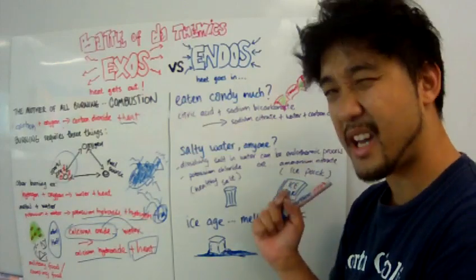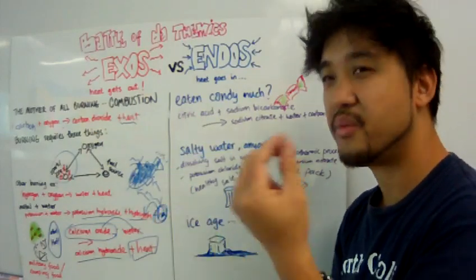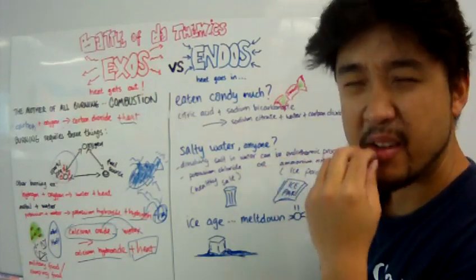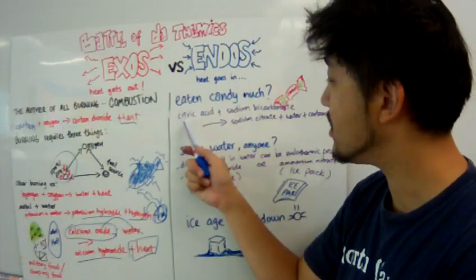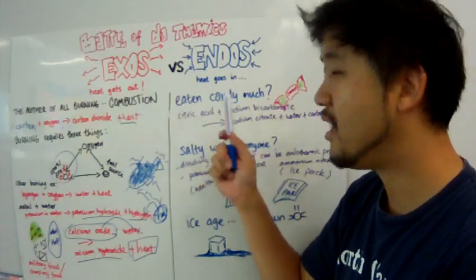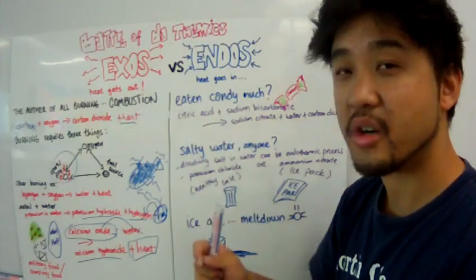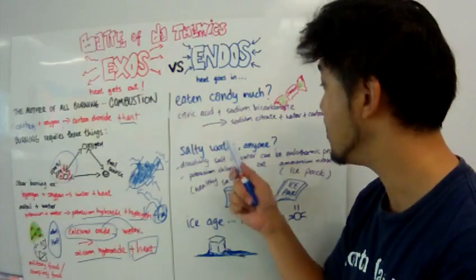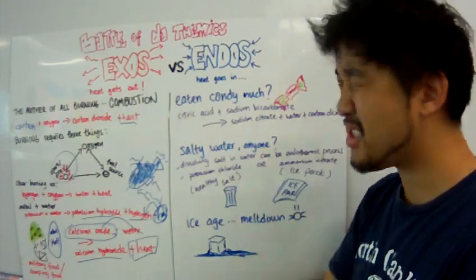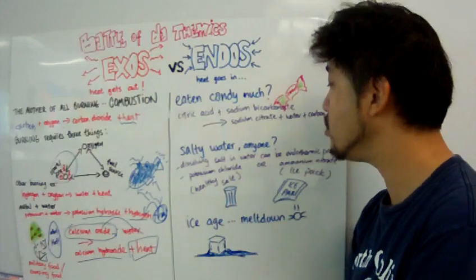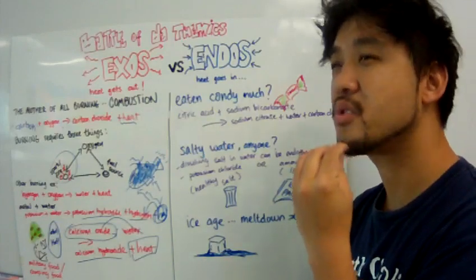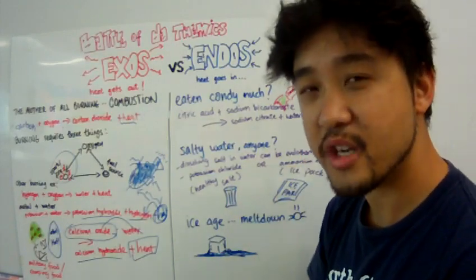For example, if you've eaten candy, when you touch a piece of candy, it don't feel like much. It's maybe a little cold, but when you put it in your mouth, your mouth has saliva. It's going to dissolve the citric acid and the sodium bicarbonate to make acids and alkali. And when you mix acids and alkali, you're going to have a neutralization reaction. You're going to get sodium citrate, water, and carbon dioxide. And what that's going to do is that it is going to feel cold. That's why when you eat candy, it feels cold. And that, my friends, is an endothermic reaction.